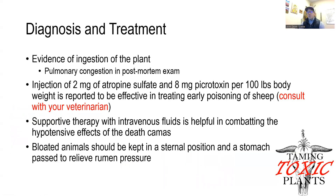In terms of diagnosis and treatment, we would want to diagnose the problem first by looking at the range site, noting whether there was death camas and whether conditions were suitable for animals to be grazing it. We can also use postmortem or necropsy exams, such as finding pulmonary congestion. For veterinary intervention — consult with your veterinarian — there is evidence that injection of two milligrams of atropine sulfate and eight milligrams of picrotoxin per 100 pounds of body weight could help reverse problems if administered early in sheep. We can also provide supportive therapy with IV fluids to help combat hypotension. If animals are bloated, position them in a sternal upright position and relieve the gas pressure in the rumen.